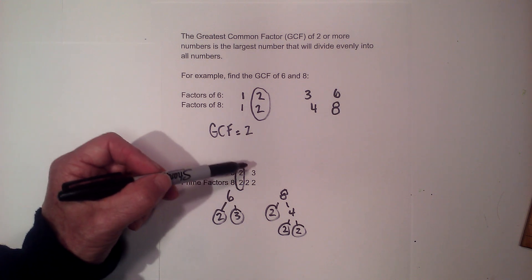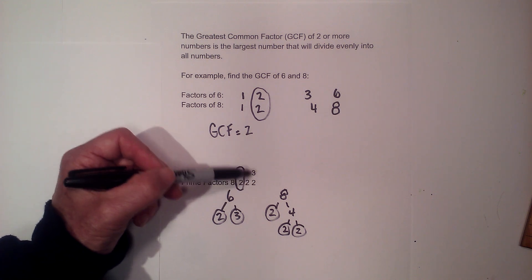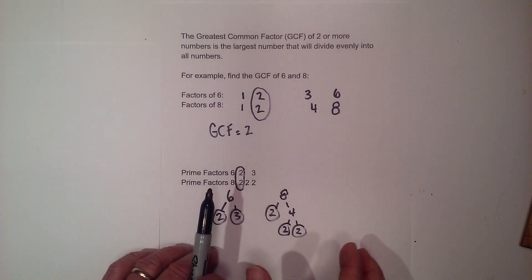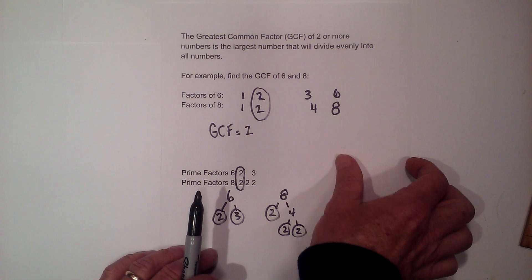Now if there was more than one prime number common on each list you would multiply these together and I've got an example of that in just a moment.